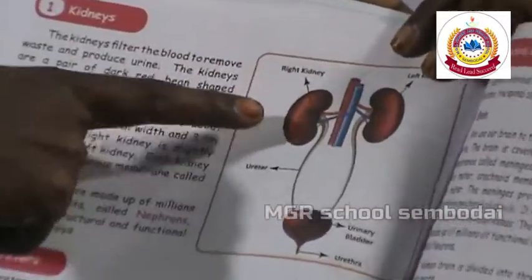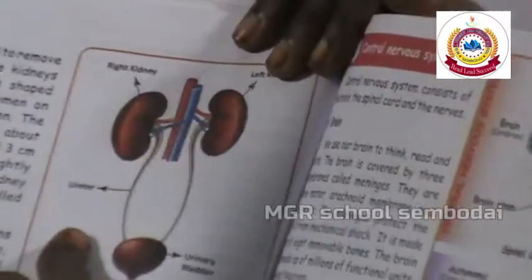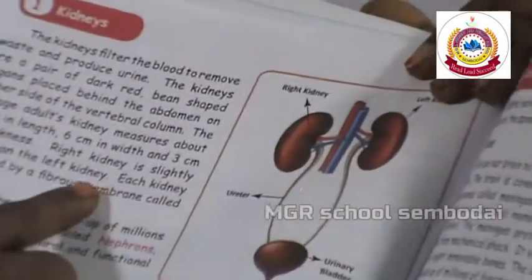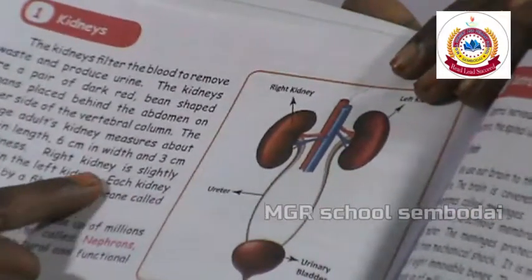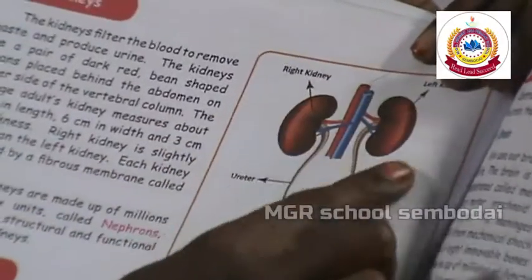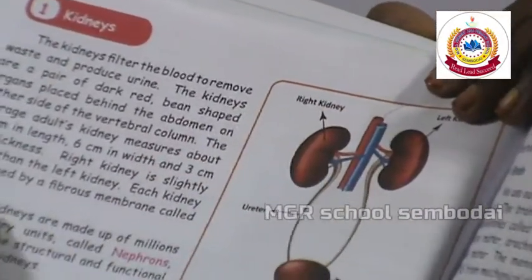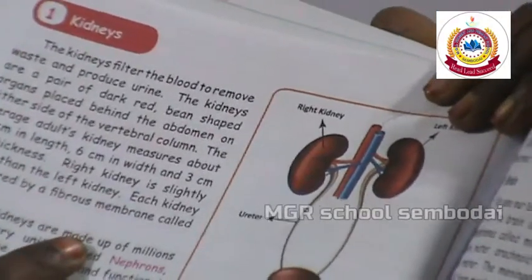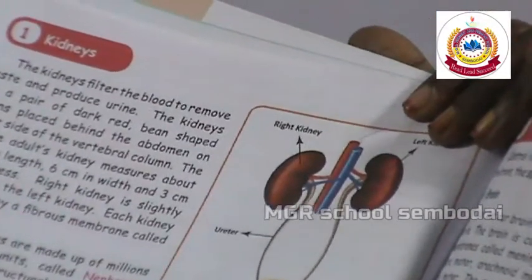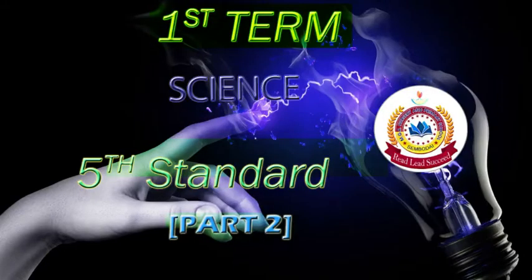The right kidney is slightly lower than the left kidney. Each kidney is covered by a fibrous membrane called the capsule. The kidneys are made up of millions of excretory units called nephrons, which are the structural and functional units of the kidneys.